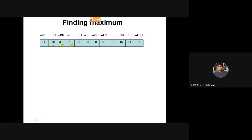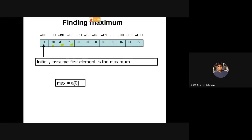The algorithm works like this: the first element is 4. The first student's mark is 4, so let us assume that this is the maximum. Then let's move on to the second student's mark.